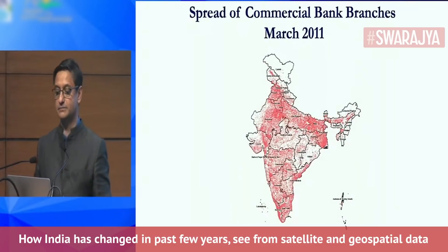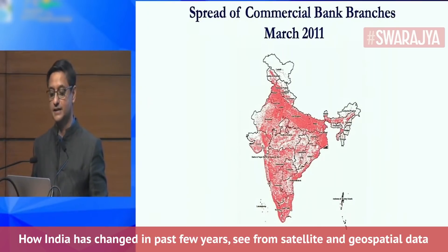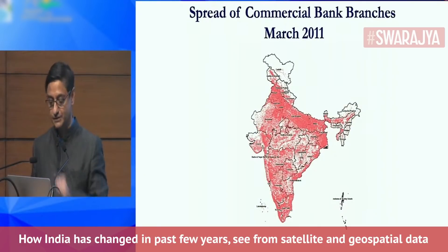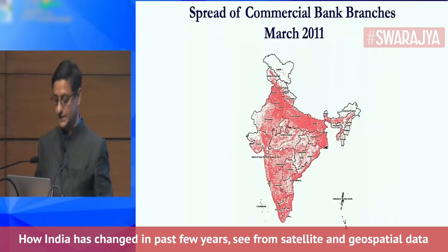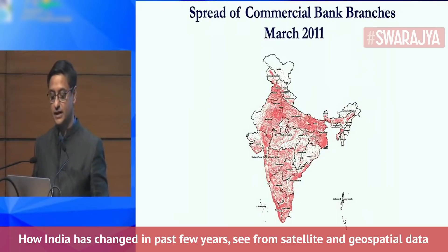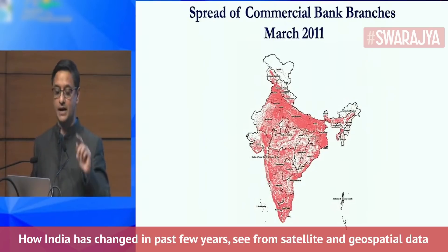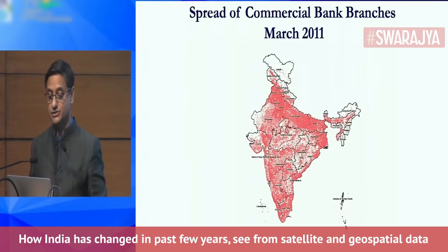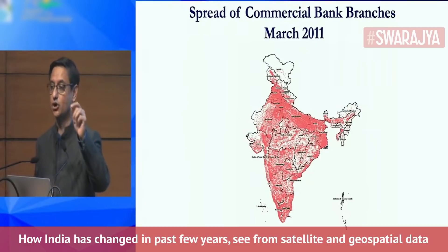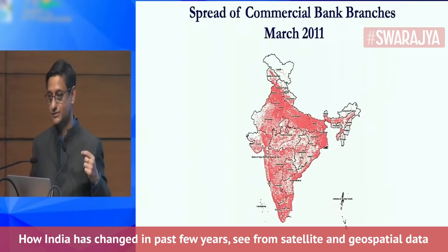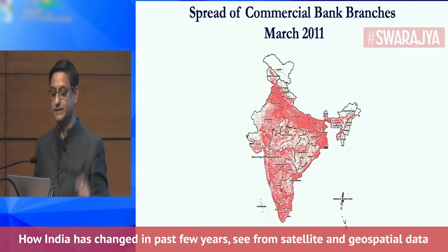Let's look at the spread of commercial bank branches. This is March 2011 — actually this should be 2021, not 2011; there's a mistake here. But you can see, over 10 years, how commercial bank branches have spread. This number for March 2021 has actually slightly gone down because of mergers in public sector banks, so this is after those mergers have already been reflected.